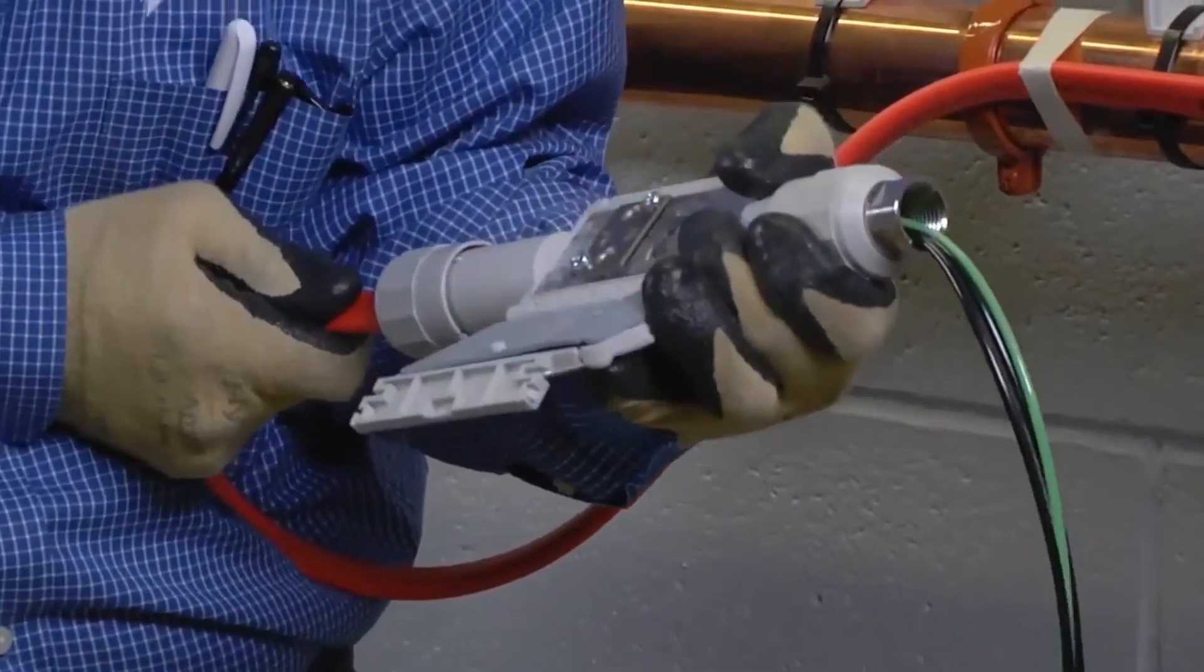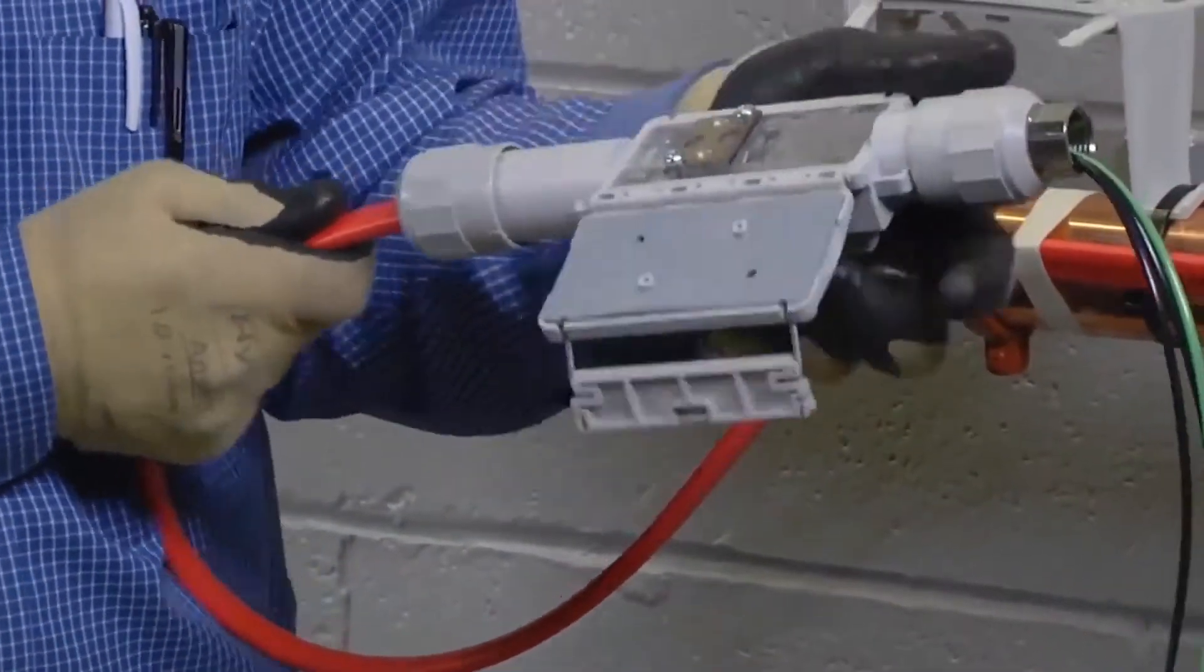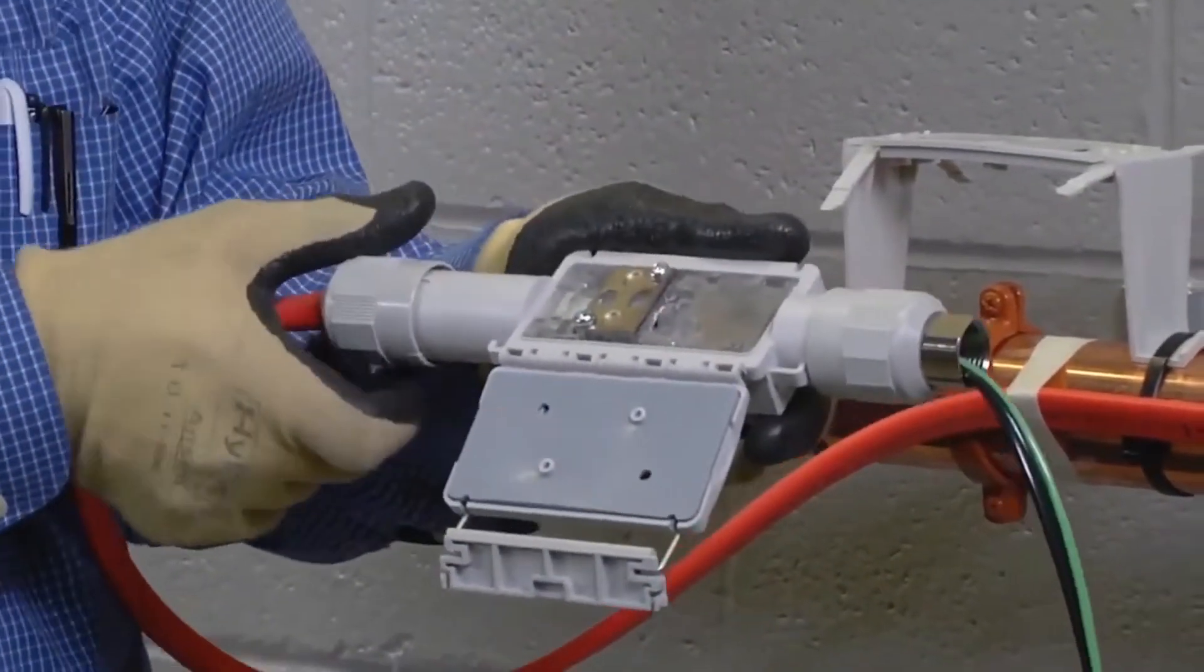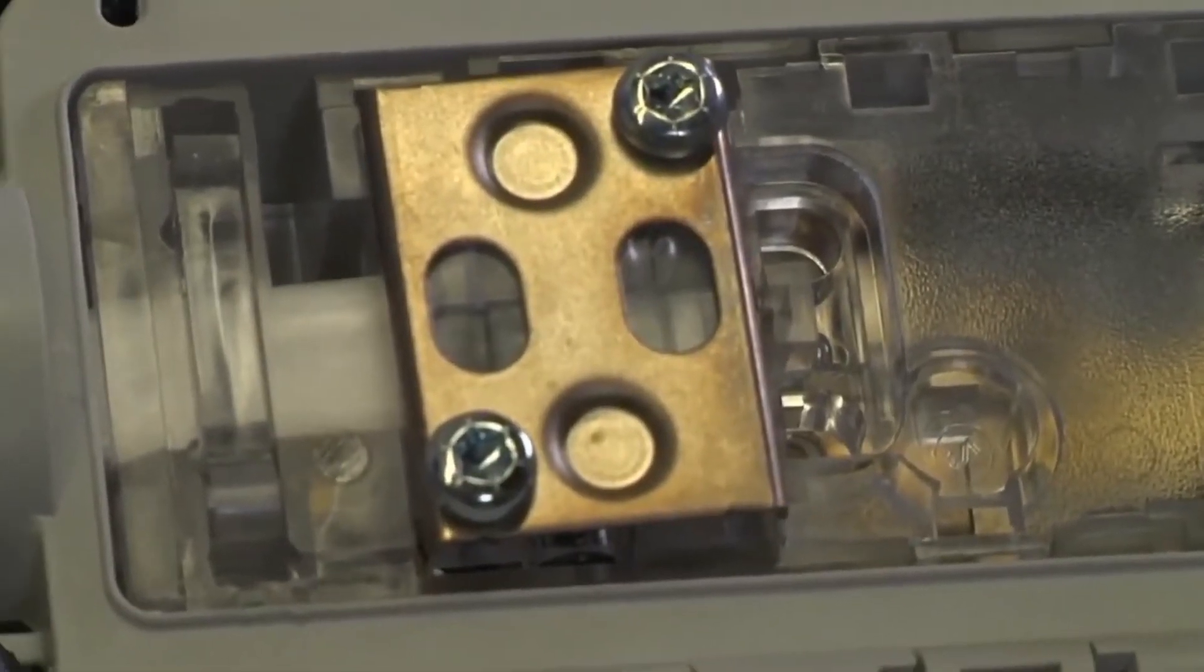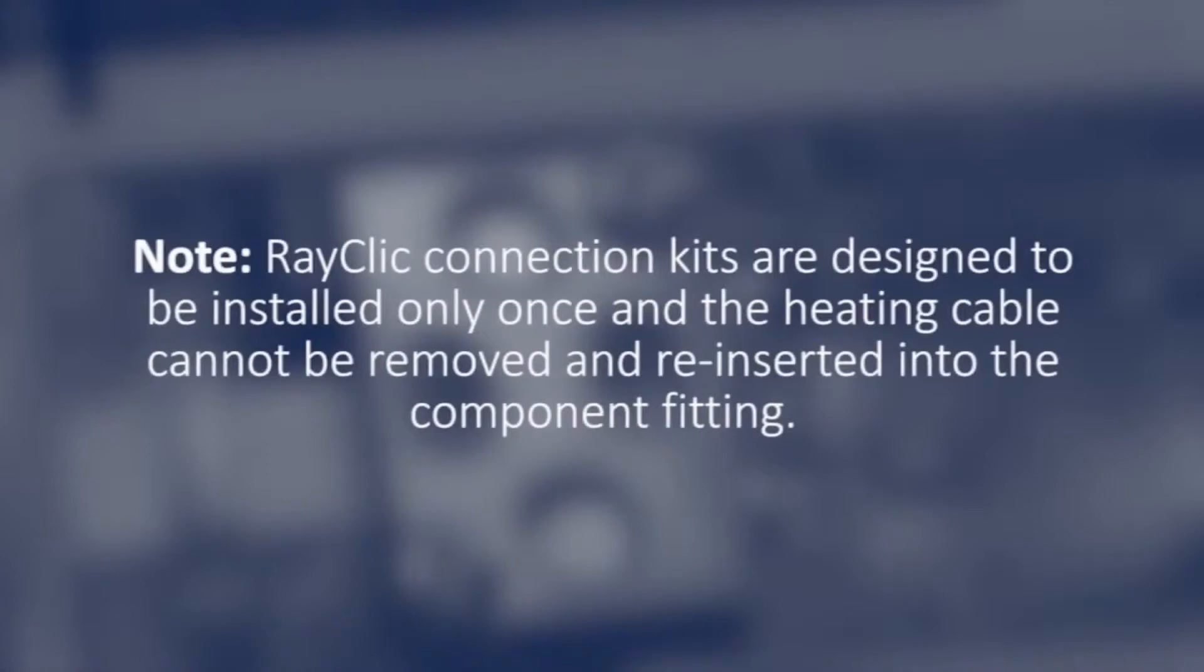Push the heating cable into the RayClick PC fitting until the end is fully visible through both window openings in the cover plate. Note that RayClick connection kits are designed to be installed only once, and the heating cable cannot be removed and reinserted into the component fitting.